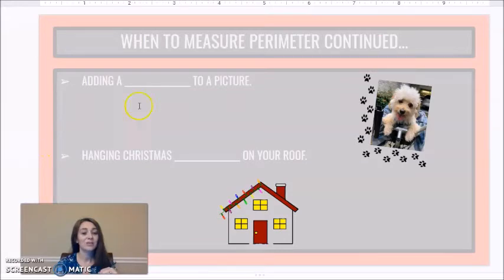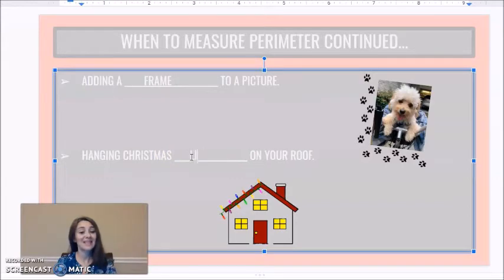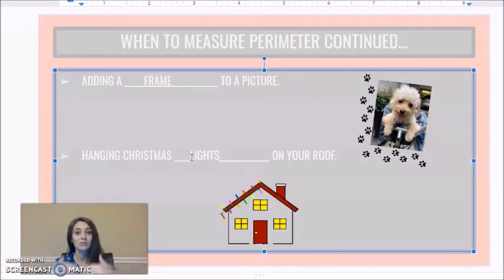Alright, here's some more. When you are adding a frame to a picture or when you are hanging Christmas lights on your roof. You want to go around the border of your house. You wouldn't cover your whole house with lights because that would look crazy and cost a lot in electricity.